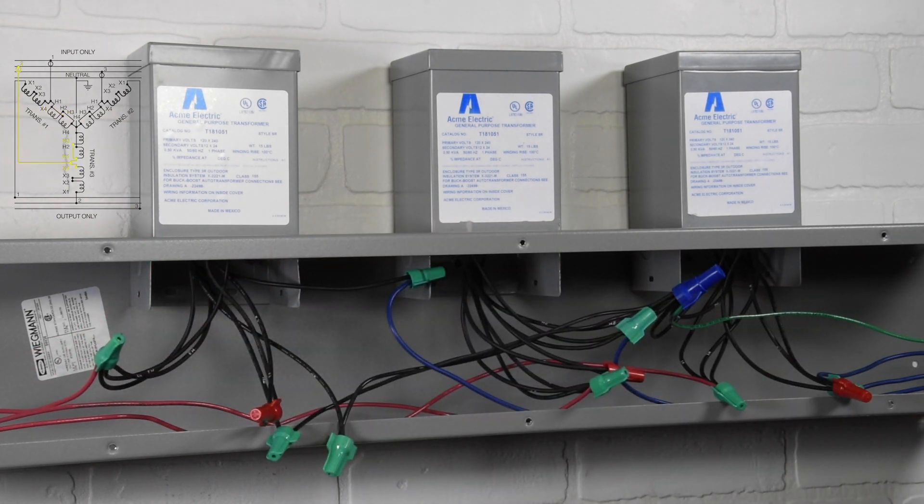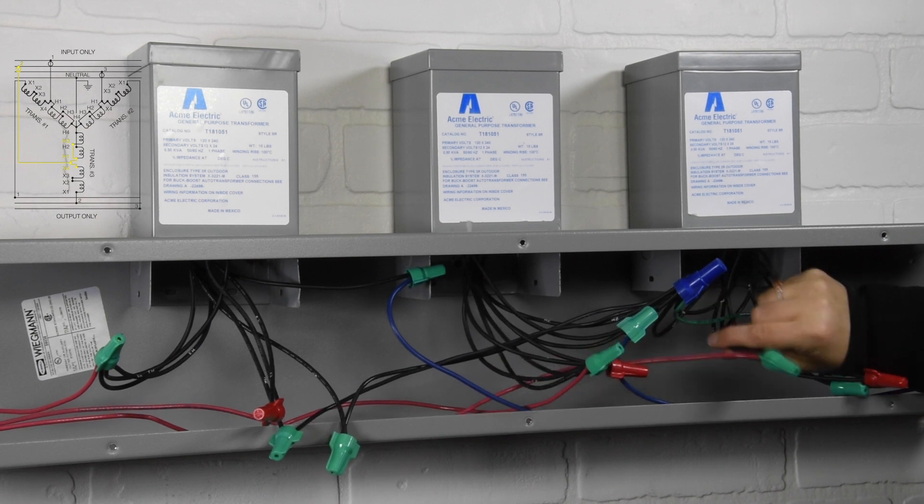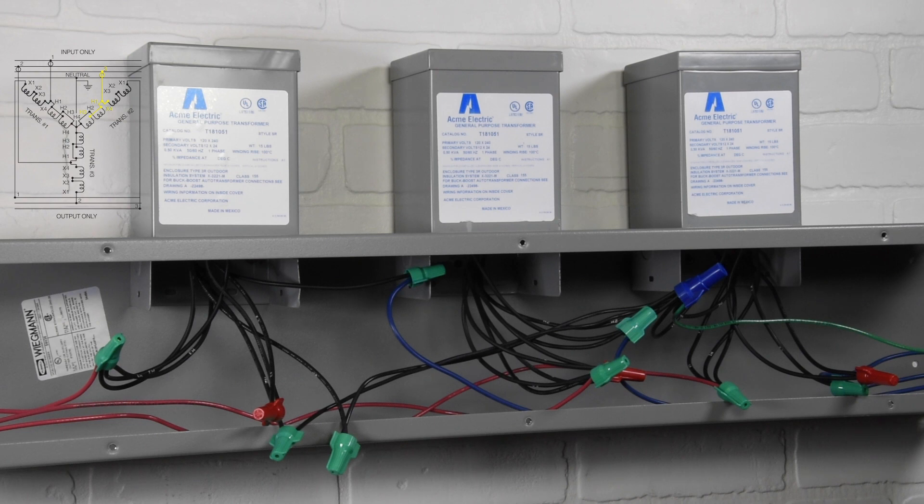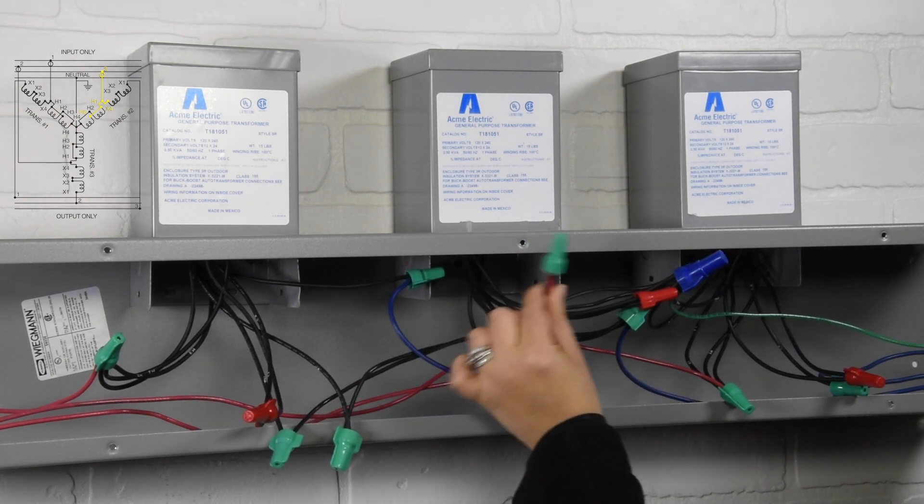Second connection: input 2 to transformer 3 wires H1 to X4 to H3. Third connection: input 3 to transformer 2 wires H1 to X4 to H3.